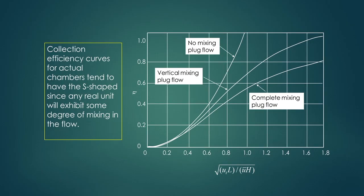The efficiency of the settling chamber based on three flow conditions — complete mixing with plug flow, vertical mixing with plug flow, or no mixing with plug flow — can be assessed. Generally you will see an S-shaped profile for the efficiency of the settling chamber as a function of the parameter sqrt(ut*L / (u*H)). From this graph you can see how efficiency of the settling chamber changes and also how efficiency changes with degree of mixing.